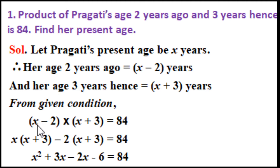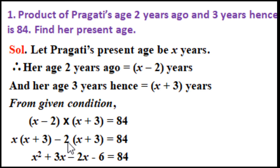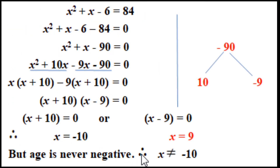So we multiply: (x minus 2)(x plus 3) is equal to 84. Expanding: x squared plus 3x minus 2x minus 6 equals 84. Simplifying: x squared plus x minus 6 equals 84, so x squared plus x minus 90 equals 0. Here we use the factorization method. We need two numbers whose product is minus 90 and whose sum is plus 1.